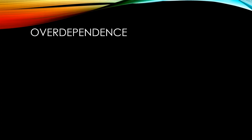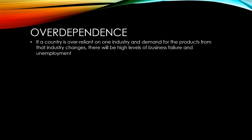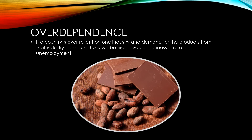Another possible cost of specialization for a country is over-dependence, where a country is over-reliant on one industry. If the demand for products from that industry changes, there could be high levels of business failure and unemployment. For example, 40% of the Ivory Coast's exports are cocoa products. If demand for chocolate were to significantly change, they could be highly affected. They also face risks from environmental factors such as drought and competition from other countries that produce cocoa.